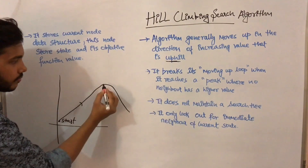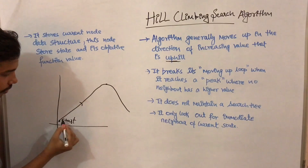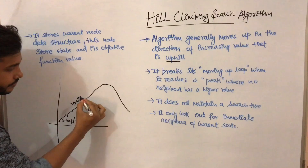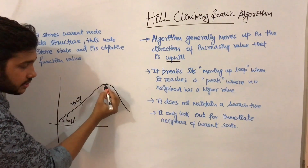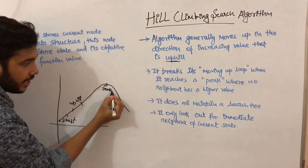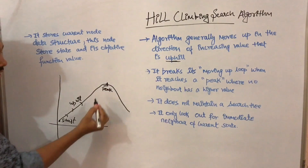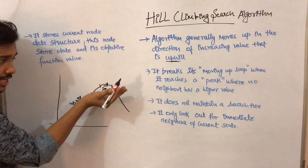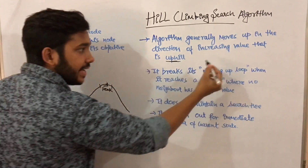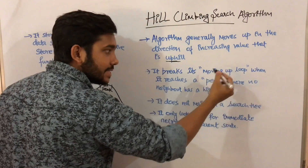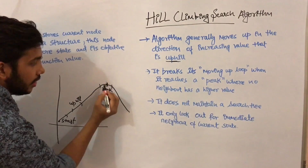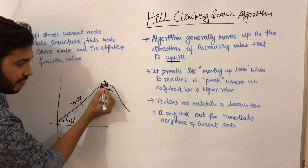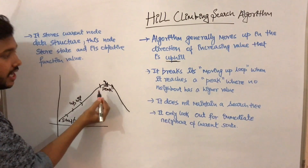Starting from this point, it continues to move in the upward direction until it reaches a point known as the peak. All neighbors nearer to this peak node will have a lesser value than this node. It breaks its moving-up loop when it reaches the peak because this point has the maximum value and the surrounding points have a lower value.